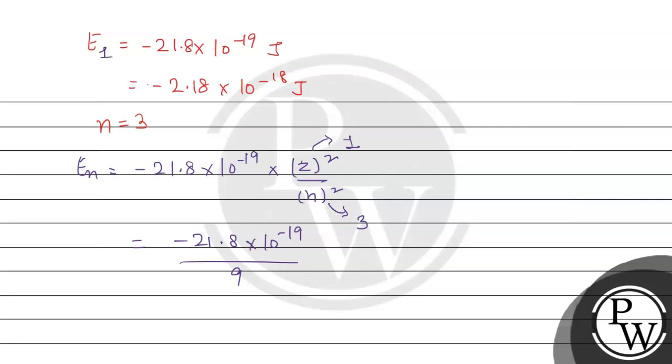Let's write this as E1, and this is for the third orbit, so we get E3. Here we can see...